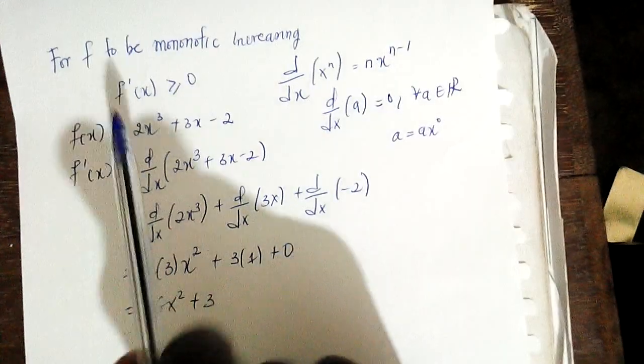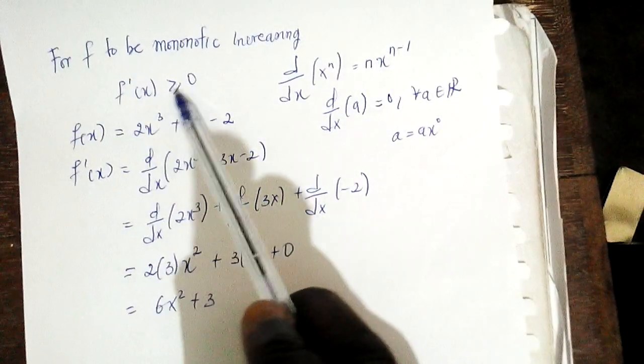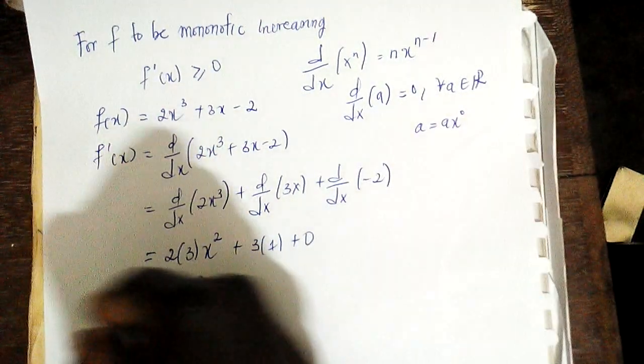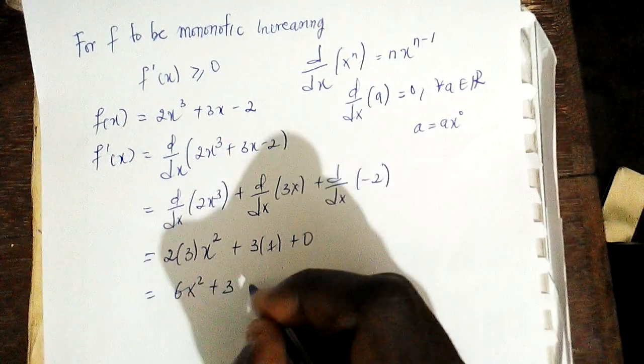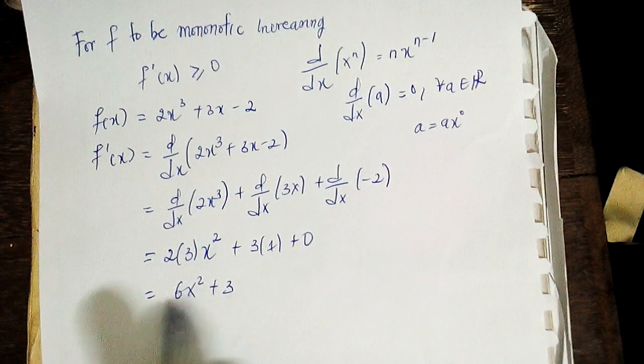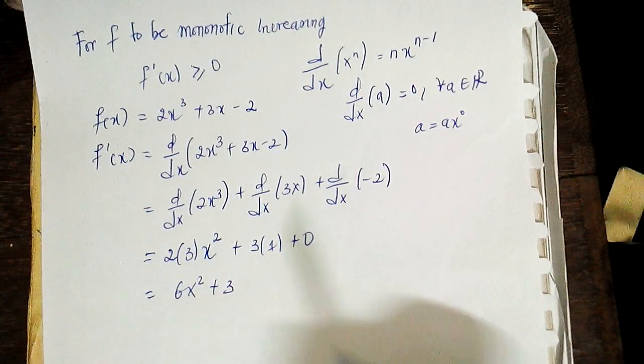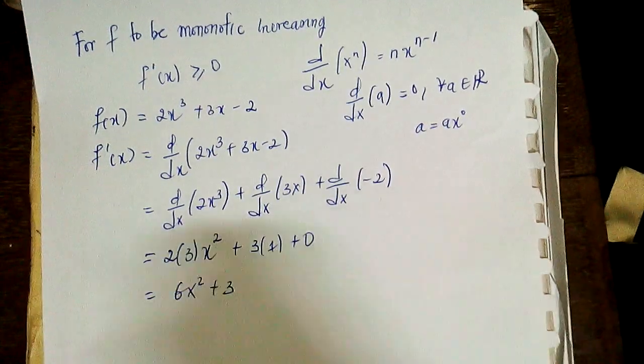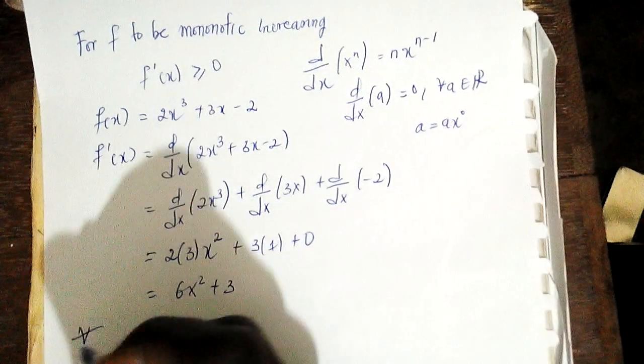Now the aim is to show that f'(x) ≥ 0. We need to justify that this f'(x) is greater than or equal to 0. Clearly, for all values of x in the set of real numbers, we have that x² ≥ 0 whenever you square a number.